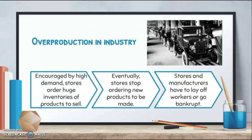Eventually, as people couldn't keep buying stuff at the rate they were, stores started to realize they weren't selling the stock in the back. So they needed to stop ordering new products from manufacturers because they had enough to last a long time. Manufacturing companies — factories — weren't getting enough orders anymore. So stores and manufacturers both had to lay off workers or go bankrupt. If you're not able to sell anything because demand has fallen, you're going to have to get rid of workers, lower your costs, or go out of business.